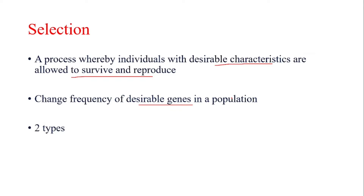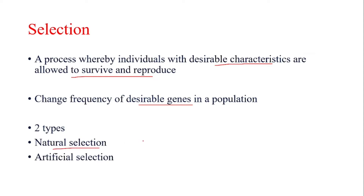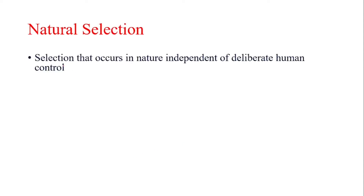Selection is mainly of two types. The first type is natural selection, which will be discussed in today's lecture, and the second type is artificial selection, which will be discussed in the next lecture. Natural selection can be defined as a selection that occurs in nature independent of deliberate human control.